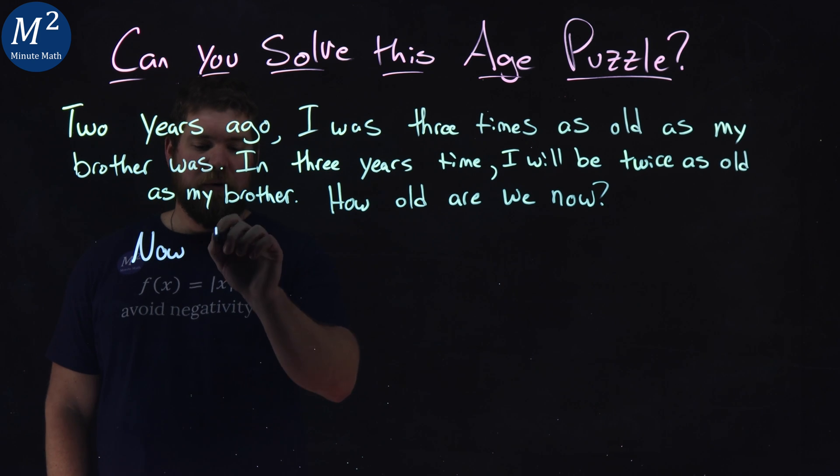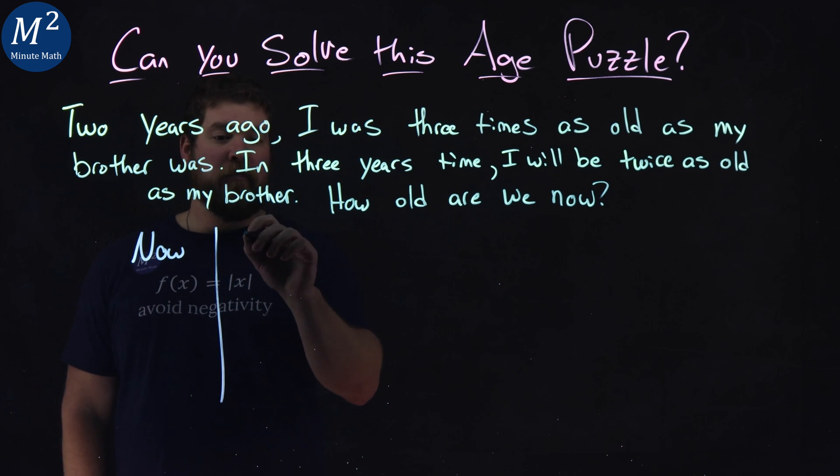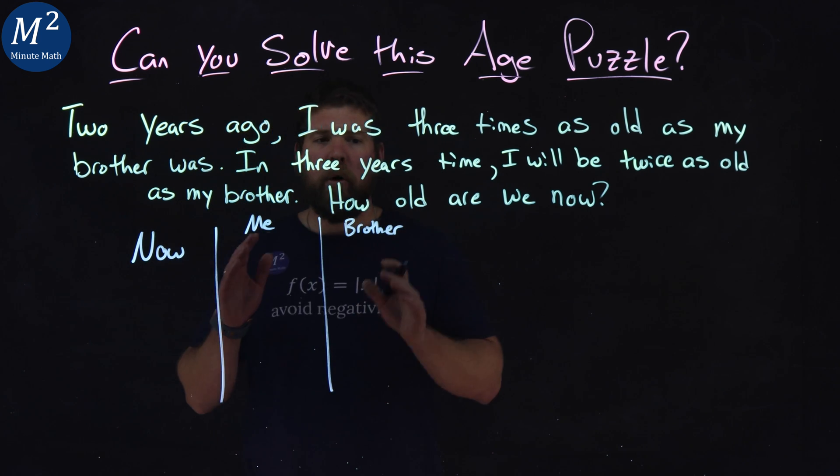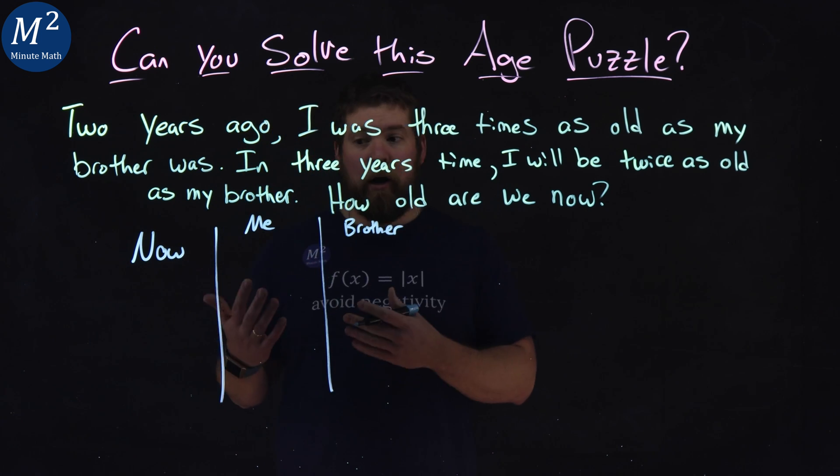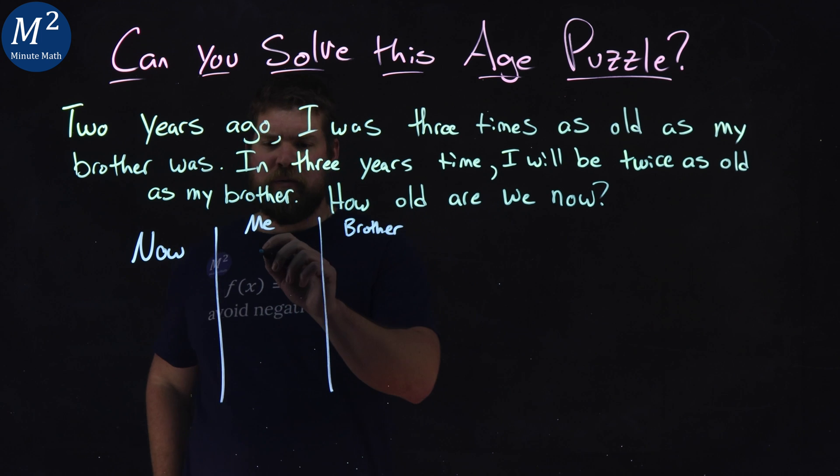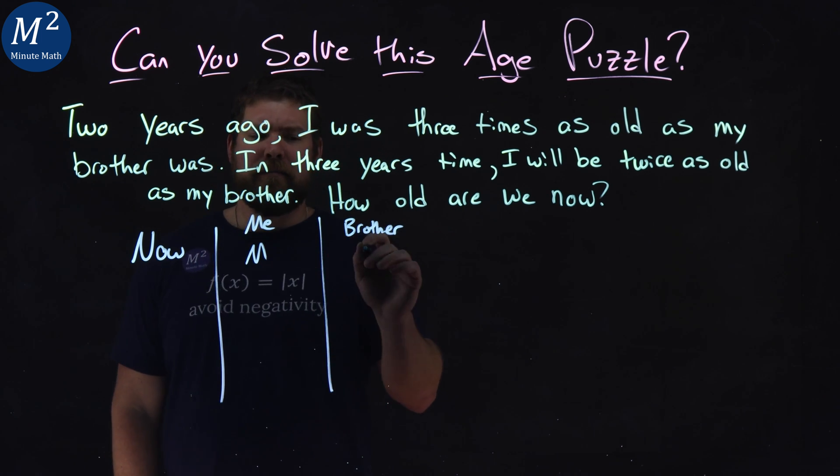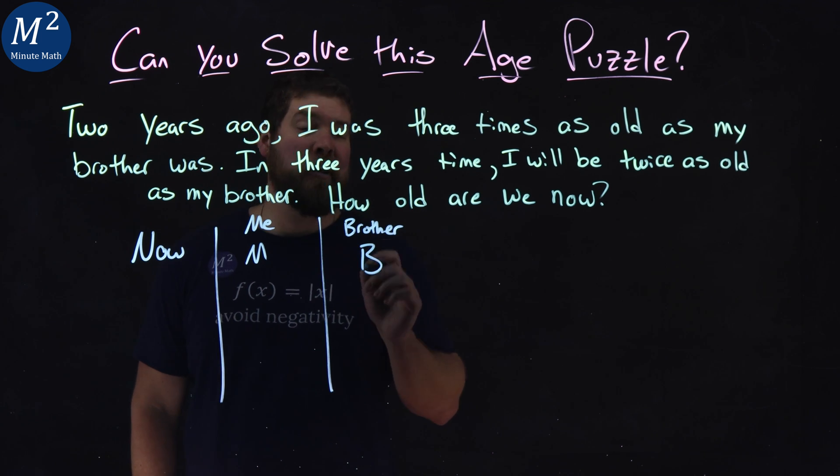Now, we have our ages of me and my brother. Let's make those a variable. Say right now, my age is represented by the letter M and the age of my brother, you can guess it, B.